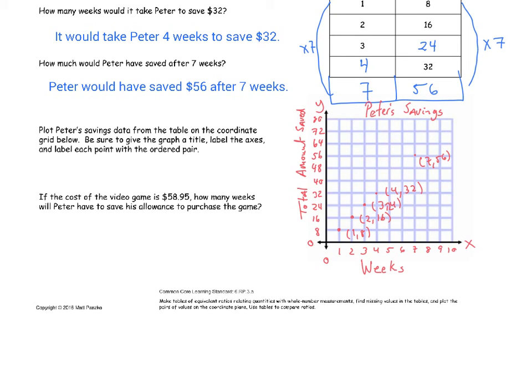He's short about $3. So what he has to do is he's going to have to wait another week. Why? It's because after eight weeks, he has saved $64. I wrote, Peter will have to save for eight weeks to buy his video game.